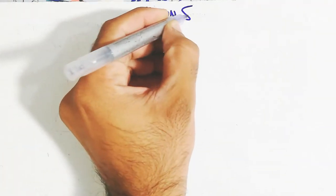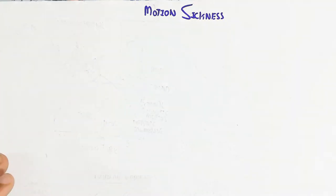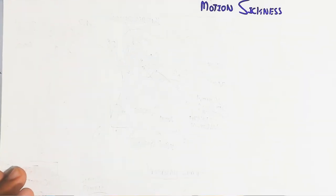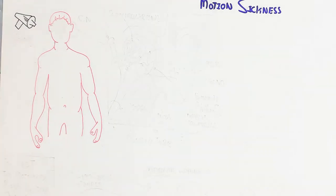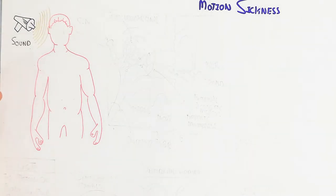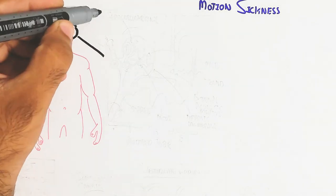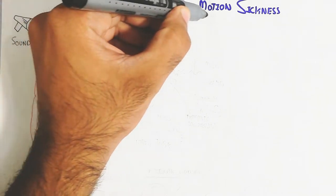In this video we will discuss motion sickness — the vomiting during traveling and the bad situation it causes. This is due to the activation of the autonomic nervous system by imbalances of posture and vision. The head moves left and right repeatedly, or experiences jerks, and sound from bus horns and other sources is also involved.